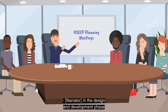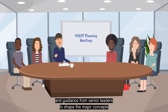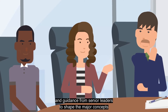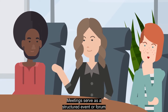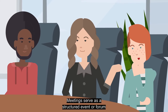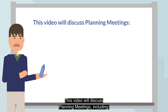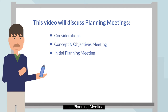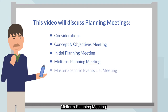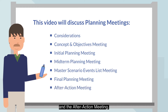In the design and development phase of exercise planning, the planning team uses program priorities and guidance from senior leaders to shape the major concepts and considerations for a single exercise or series of exercises. Meetings serve as a structured event or forum for completing the major milestones of exercise design and development. This video will discuss planning meetings including planning meeting considerations, the concept and objectives meeting, initial planning meeting, midterm planning meeting, master scenario events list meeting, final planning meeting, and the after action meeting.